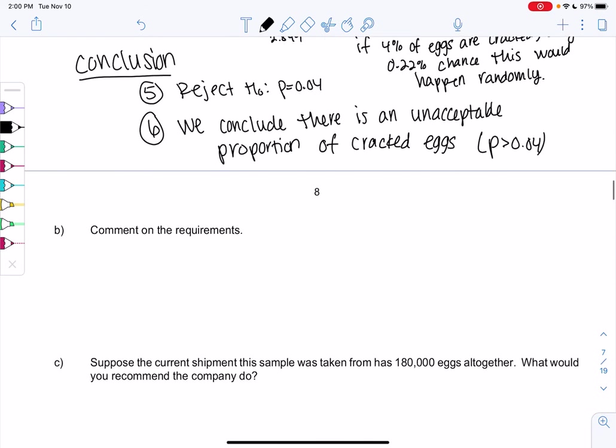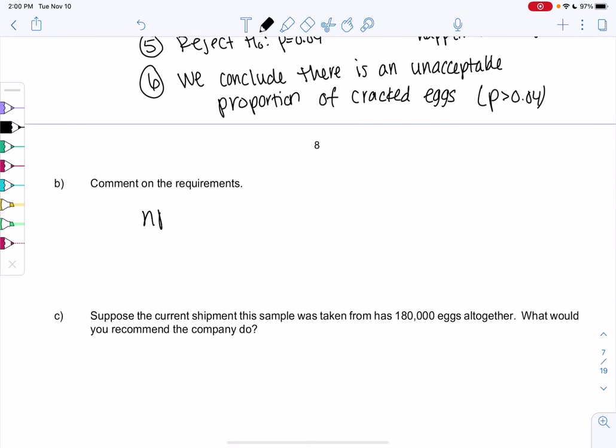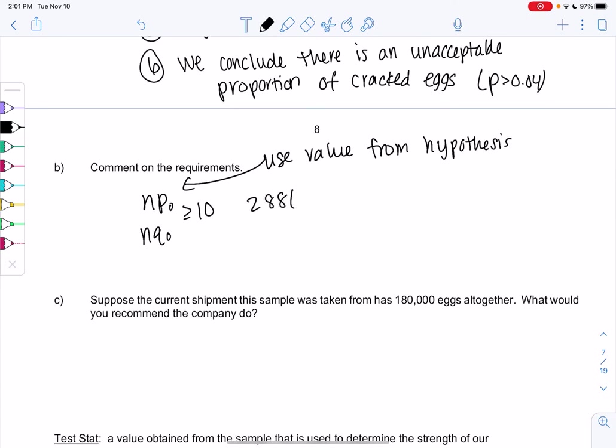Let's comment on the requirements. Since it's proportions, it's going to be that same NP and Q, greater than or equal to 10. We have two different P's. Since we have the sample and the hypothesis, we're going to use the hypothesis value, the 0.04. So we'll do 288 times 0.04, and then Q would be 288 times 1 minus 0.04. I get 11.52 and 276.48, greater than or equal to 10. Requirements are met.